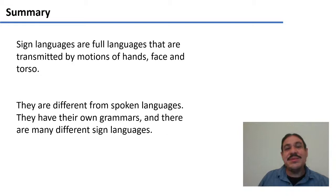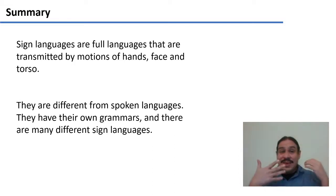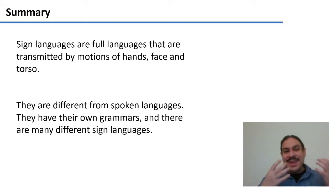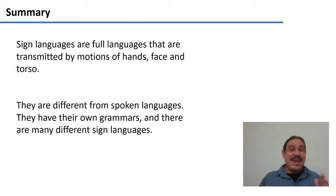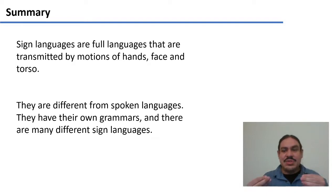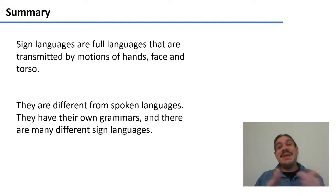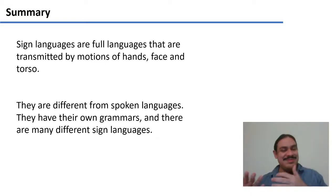In summary, sign languages are full languages with their own grammars, transmitted with motions of hands, face, and torso — just as spoken languages use motions of lungs, vocal cords, and mouth to transmit ideas. They're different in that they have their own grammars, but they share the same properties as spoken languages, such as being generative and capable of producing new sentences. There are many of them, and in our next video we'll look at how we could use sign languages with natural language processing.